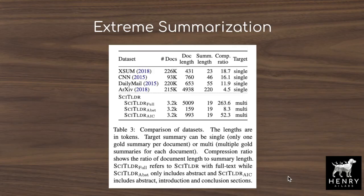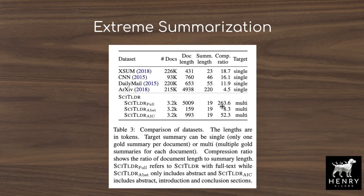Summarization with natural language processing models has mostly been tested on news datasets such as the CNN or Daily Mail datasets, where you have news articles and then try to distill them into two sentences or so. The interesting detail about this science too-long-didn't-read dataset is that it has a really high compression ratio compared to most of these other summarization datasets. You're going from these massive document lengths into these one-sentence summaries, which is part of what makes this task extreme summarization and different from a lot of previous approaches.